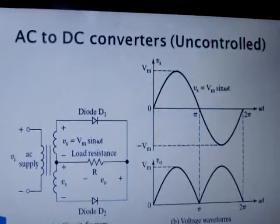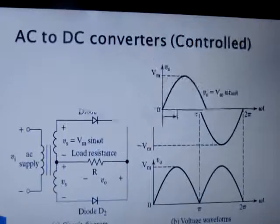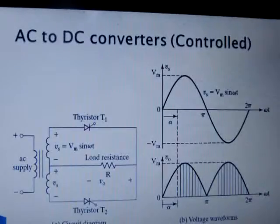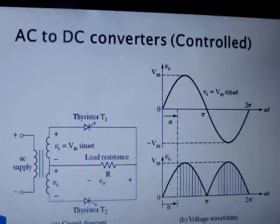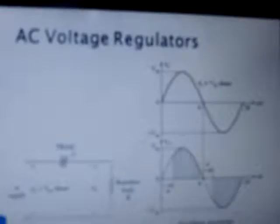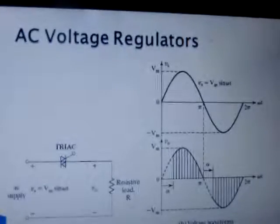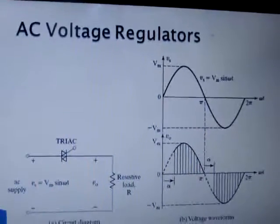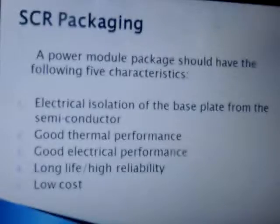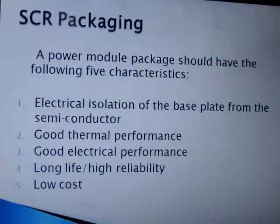This is again a full-wave rectifier but made using a thyristor. By changing the firing angle alpha, you can control the average and RMS voltage supplied to the load and thus control the power delivered. These are AC voltage regulators or fan regulators, in which you control the RMS magnitude of the AC voltage using a TRIAC. These are some issues related to SCR packaging: electrical isolation is required, along with good thermal performance, good electrical performance, long life, high reliability, and low packaging cost.